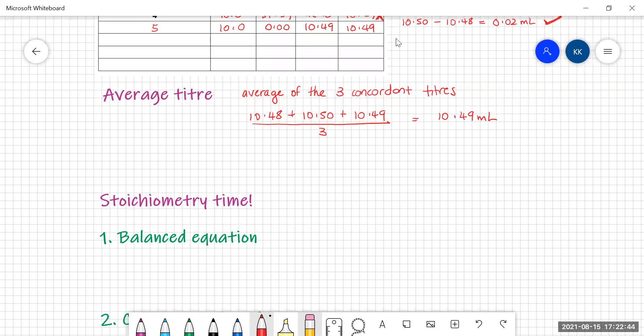So that 10.49 mils is your volume of hydrochloric acid. So if we summarize all the information you've got now, you have the concentration of hydrochloric acid is what you're trying to find out. The volume of hydrochloric acid is equal to 10.49 mils.